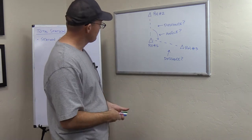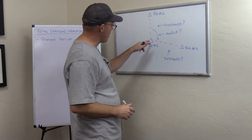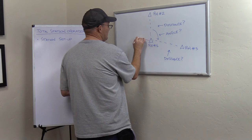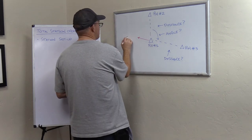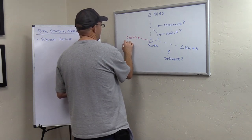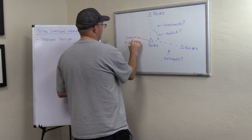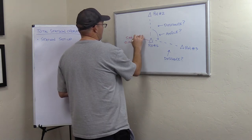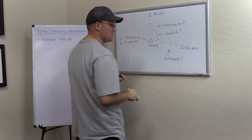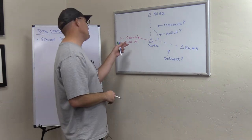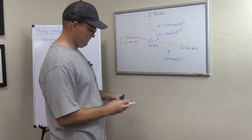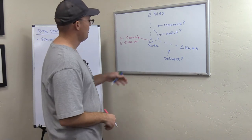Here's what you do. You get your total station set up and leveled on RH1 over the point, and we're going to assign it some dummy coordinate. A lot of surveyors will do 5,000 for the northing and 10,000 for the easting — and it doesn't really matter what these numbers are, you just want them to be big enough not to be negative usually. It could be 20,000 or 30,000. It's arbitrary — it's make believe, it's made up.